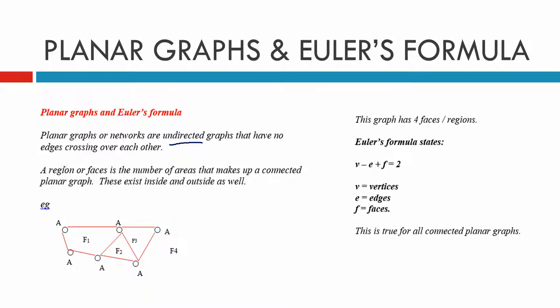A region or a face is the number of areas that make up a connected planar graph. So here we have a face that's been shaded in, here we have another face, that's why it's called F2, an F3 face right here, and then the outside as well which we've called F4. So this one has four faces. They exist in and outside.